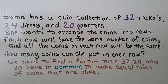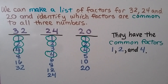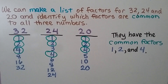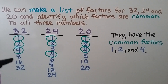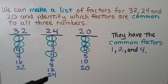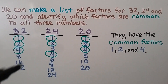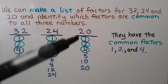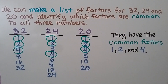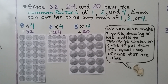We make a list of all the factors of 32, 24, and 20 and identify which factors are common to all three. For 32: 1×32, 2×16, 4×8. For 24: 1×24, 2×12, 3×8, 4×6. For 20, we list all the factors. They have the common factors of 1, 2, and 4.